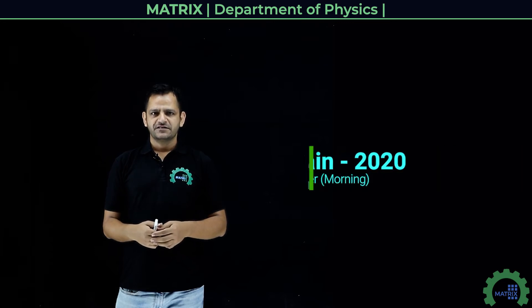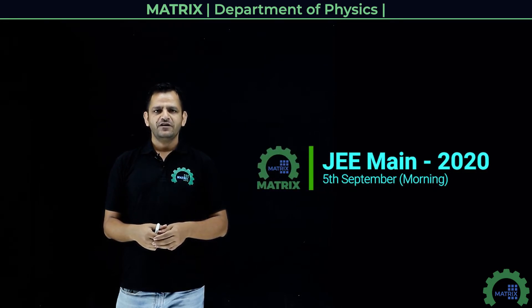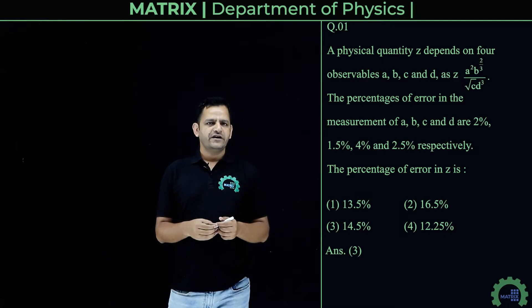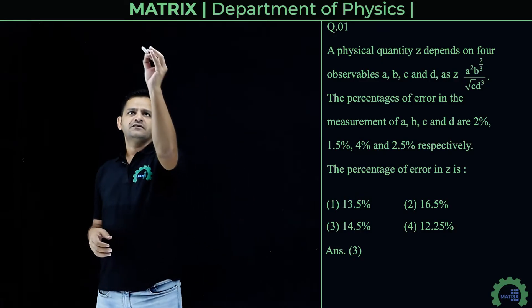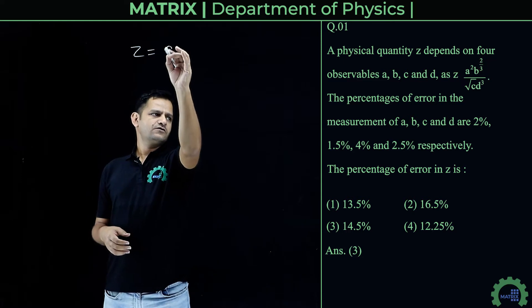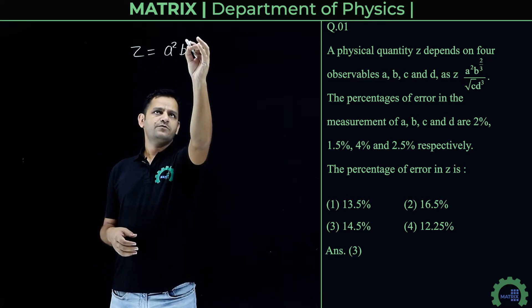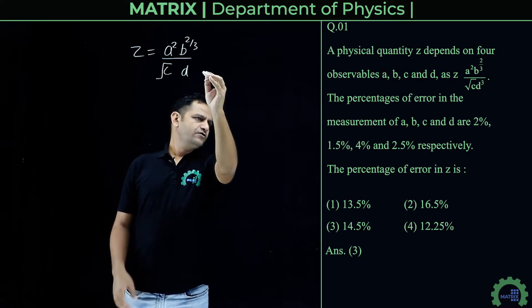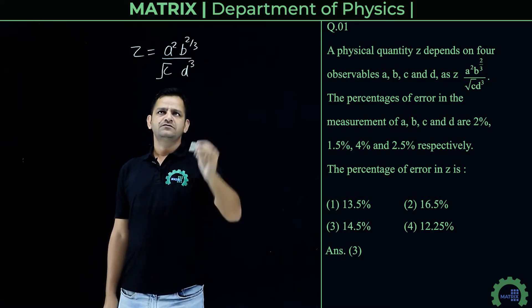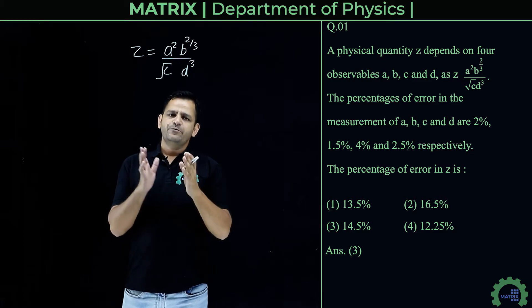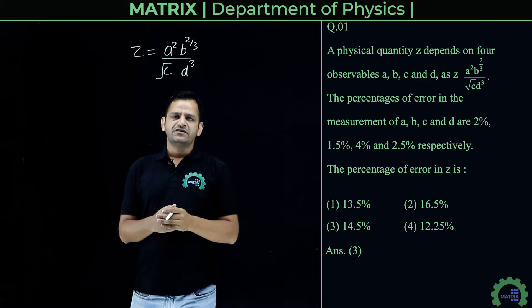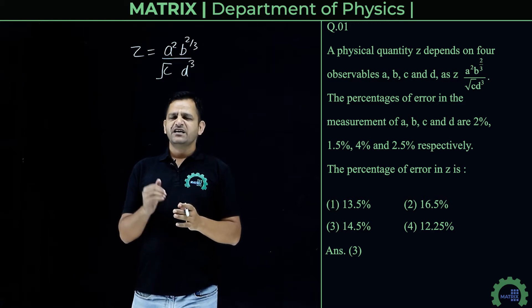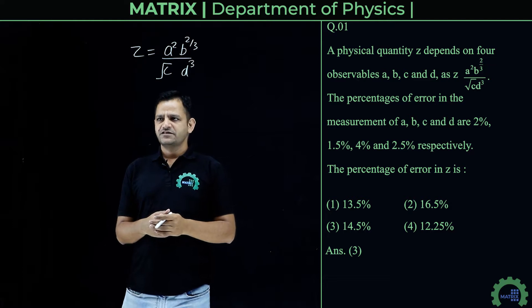In this video, we will discuss the physics paper of 5th September, first shift. In this question, a quantity z is given: z = a² · b^(2/3) divided by (√c · d³). The percentage error in a, b, c, and d is given. We have to find the maximum percentage error in the calculation of z.